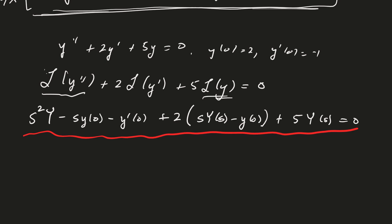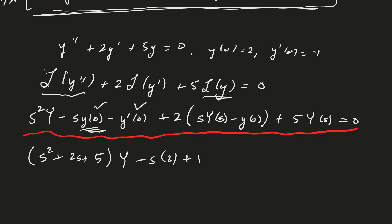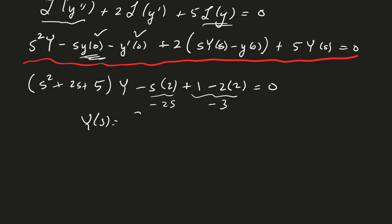We solve this algebraic equation for Y(s). Factoring out Y, we get (s squared plus 2s plus 5)·Y(s). Then plugging in y(0) equals 2 and y prime(0) equals minus 1: minus s times 2, plus 1 (since minus of minus 1), minus 2 times 2 equals 0. Combining terms gives minus 2s minus 3, so Y(s) equals (2s plus 3) divided by (s squared plus 2s plus 5).